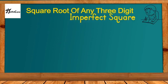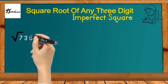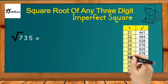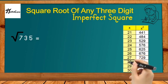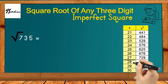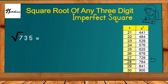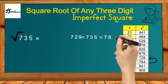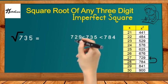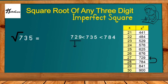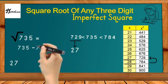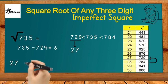Let's solve one more example: the square root of 735. First, write down the squares of 21 to 30. We find between which two perfect squares 735 lies: 27² = 729 and 28² = 784, so 735 lies between 729 and 784. We select the smaller perfect square, 729, and its square root is 27, so we write down 27.